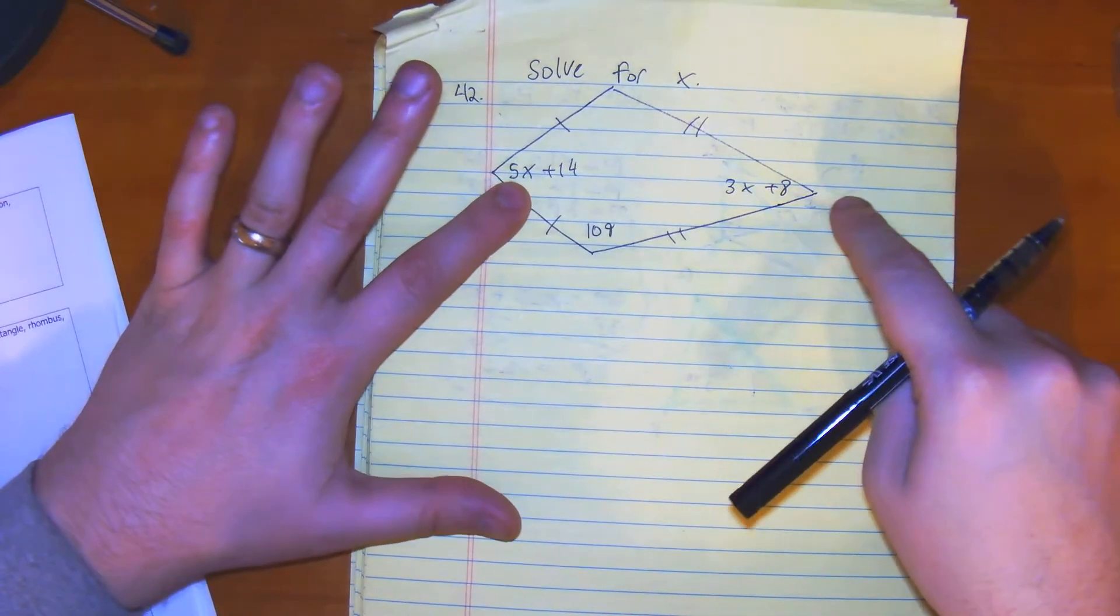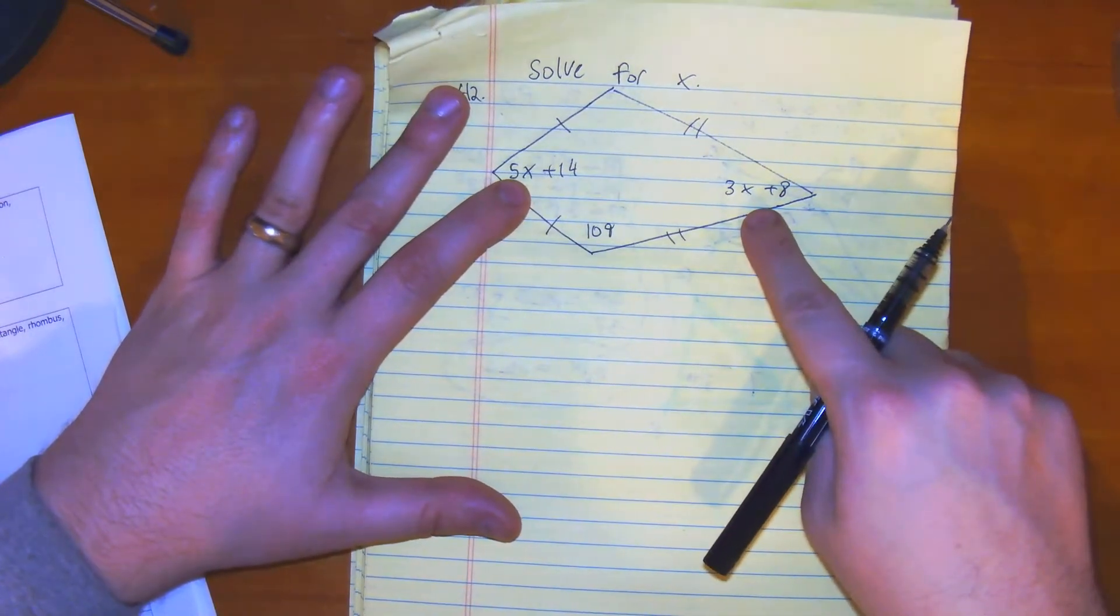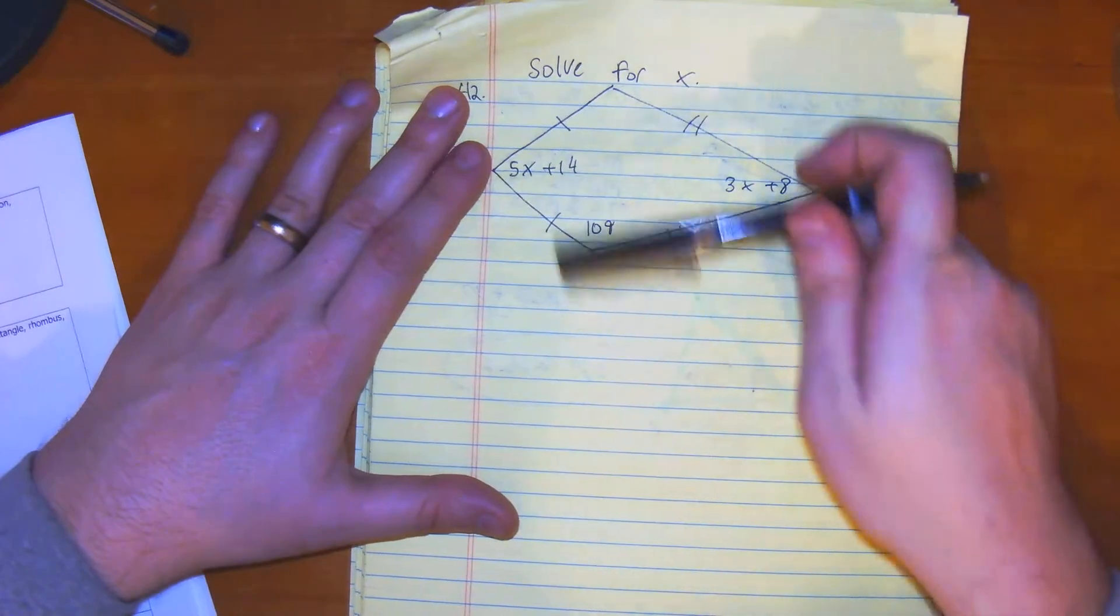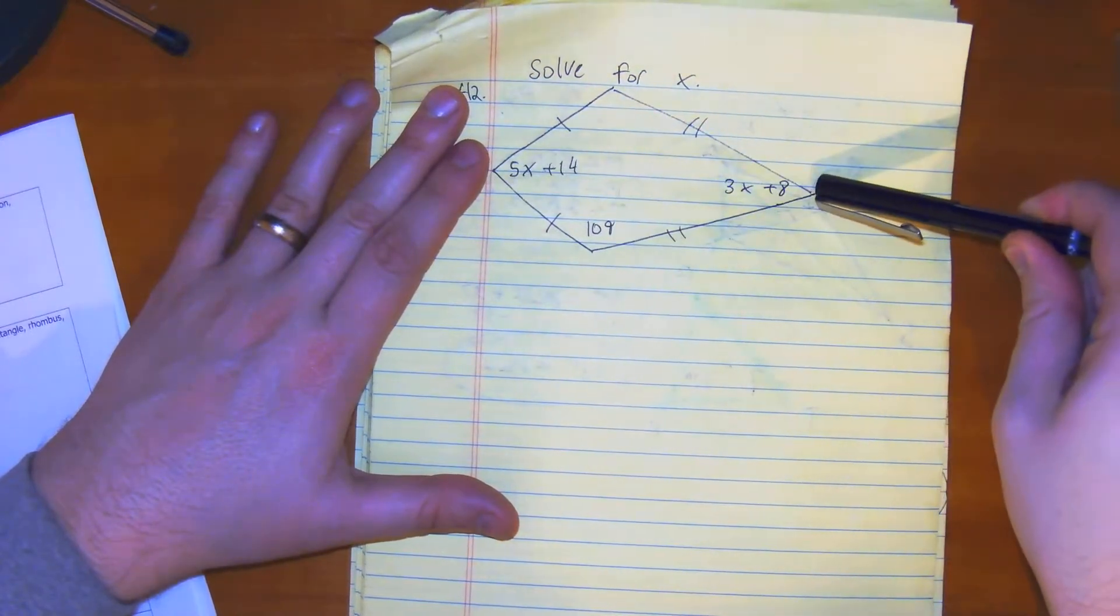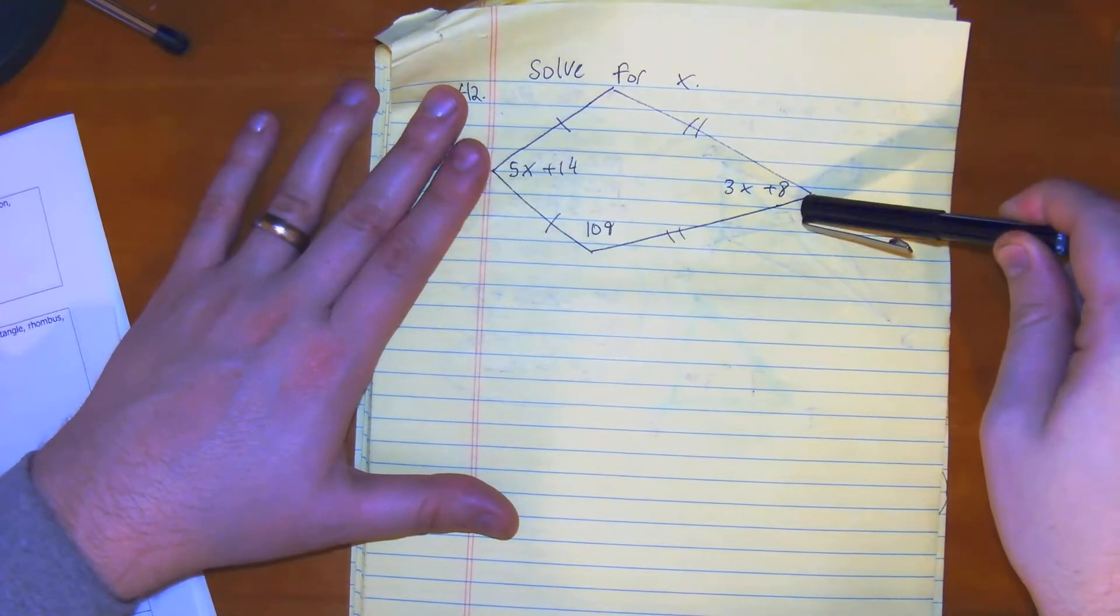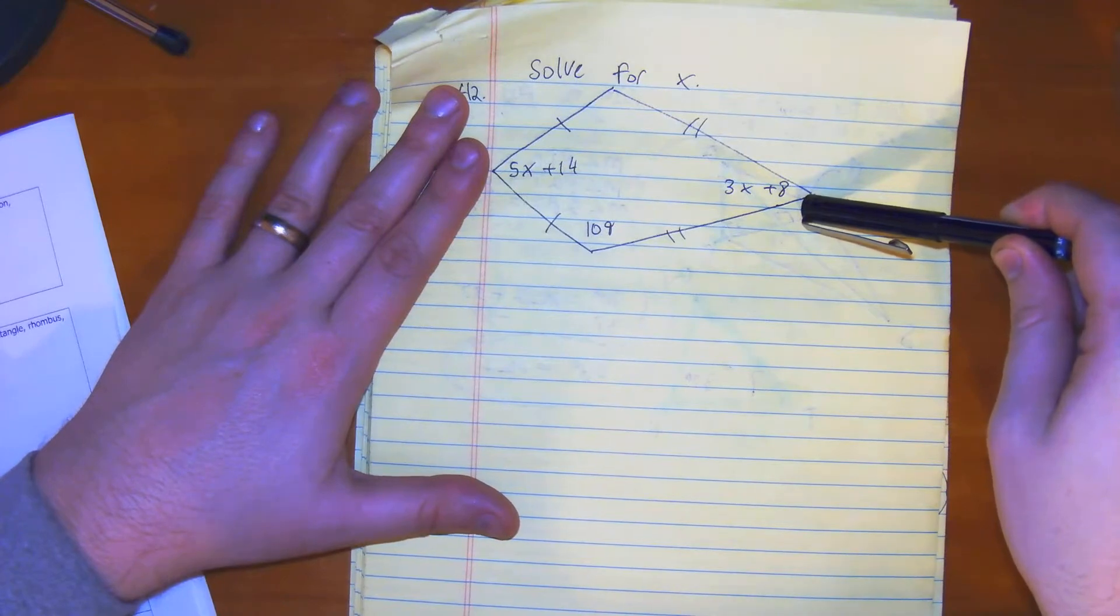It's not so simple, because you can't just equal 5x plus 14 to 3x plus 8, even though if there is a diagonal and it is an angle bisector, these are not considered to be equal. So we do have to equal everything out to 360.